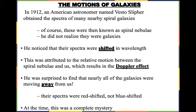The main topic for us is actually the motion of galaxies. There were many observations in the early 1900s about the motions of different galaxies. In 1912, American astronomer Vesto Slipher obtained the spectra of many nearby spiral galaxies — at that time called spiral nebulae, since they did not realize they were galaxies. What they noticed was that these spectra are actually shifted in wavelength, attributed to the Doppler effect due to relative motion.